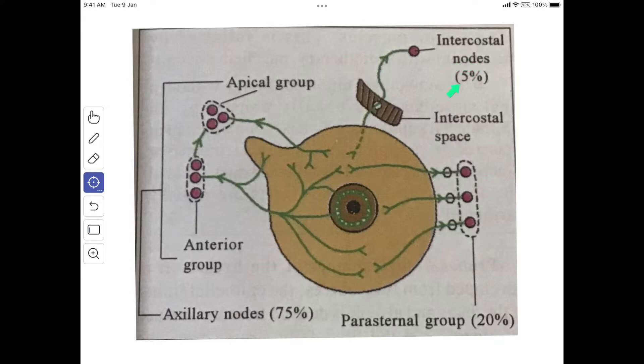About 5% of the lymphatics from the lateral and posterior part of the gland follow the posterior intercostal vessels and drain into the posterior intercostal nodes. So 75% drain into the axillary group, 20% into the parasternal group, and about 5% into the posterior intercostal nodes.